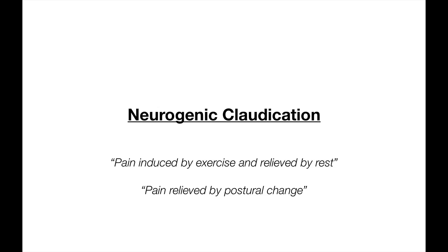If the patient does any exercise, venous return from their legs increases and as a result, the blood flow through the spinal cord veins increases too. The venous congestion therefore gets worse, the veins dilate more and they squash the underlying nerve roots, resulting in the patient getting more leg pain. When the patient stops exercising, venous return from the legs decreases, so the spinal cord veins become less congested and less dilated, the pressure is relieved and the leg pain subsides.